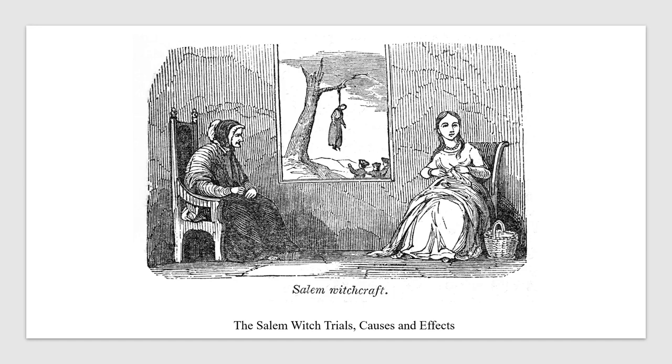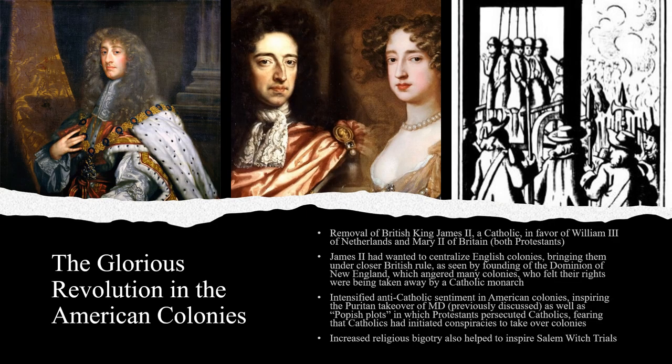Now we'll turn our attention to another important crisis in colonial history, the Salem Witch Trials. We'll discuss some of its political and social causes, and then some of its effects. King James II of England vacated Massachusetts' colonial charter in 1684 and turned the disparate New England colonies into the Dominion of New England, ruled by Sir Edmund Andros. James II was trying to bring the American colonies under more centralized imperial British control — something that angered the English colonists, who had fled England because they detested British coercion. James II was also a Catholic, which angered Protestants across all of colonial America, as they feared that a Catholic monarch would persecute them, just as Mary I had done about a century earlier.